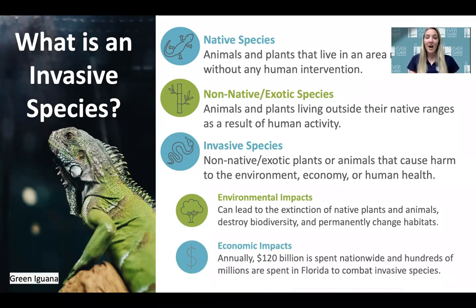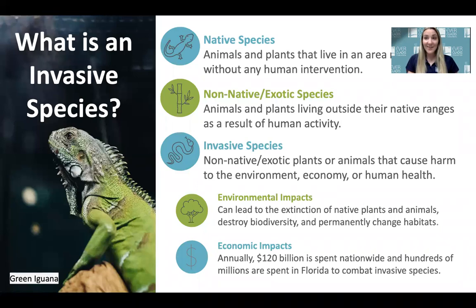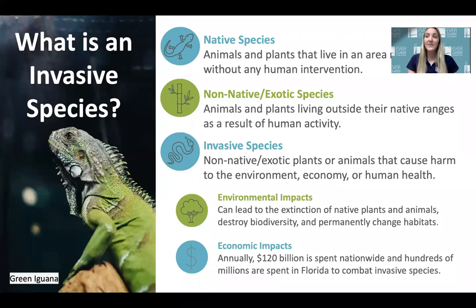Invasive species can also have significant economic impacts — about 120 billion dollars is spent nationwide annually, and hundreds of millions of dollars are spent in Florida just to combat invasive species. An example is the green iguana, native to Central and South America, first reported in Florida in the 1960s — most likely a released or escaped pet. They are now on Florida's prohibited pet list, can damage landscapes, transmit salmonella, and eat nicker bean, the host plant of the endangered Miami blue butterfly.